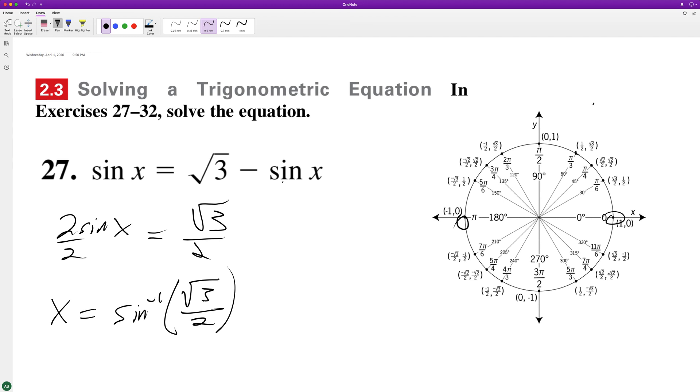So in this instance, it's opposite over hypotenuse, so square root of 3 over 2. This is a 30-60-90 triangle.